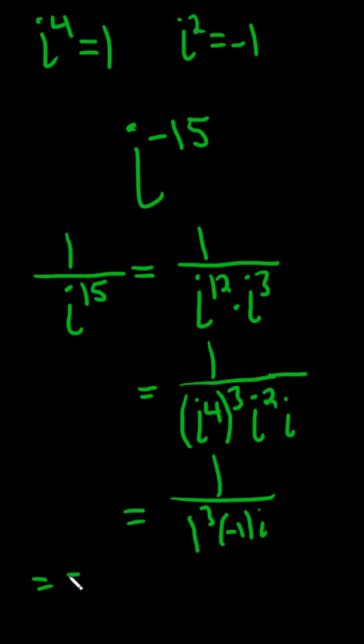So this is going to be equal to negative 1 over i. I put the negative upstairs. Multiply by i over i to clean it up. This is negative i over i squared, which is negative 1. So we just get i.